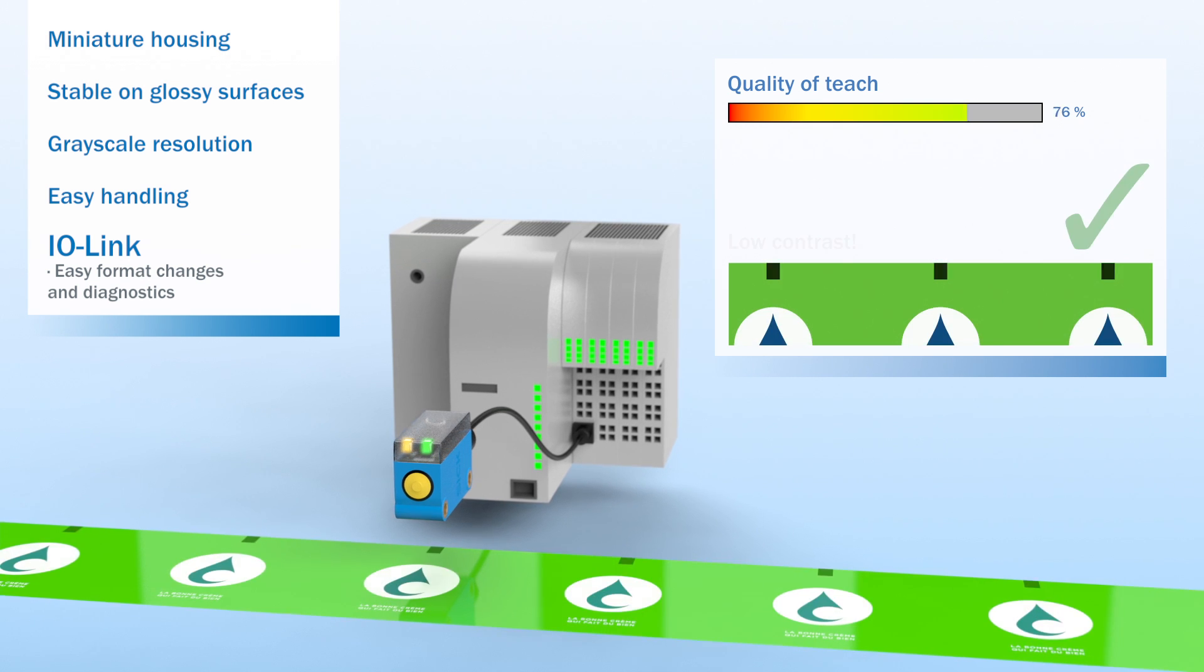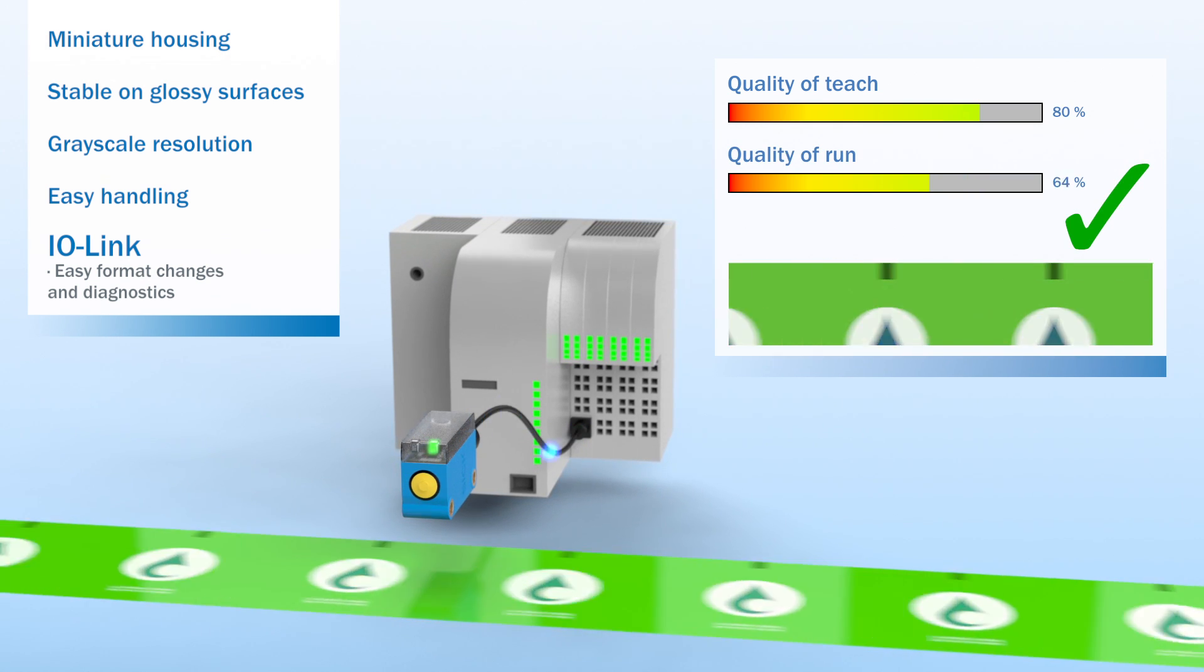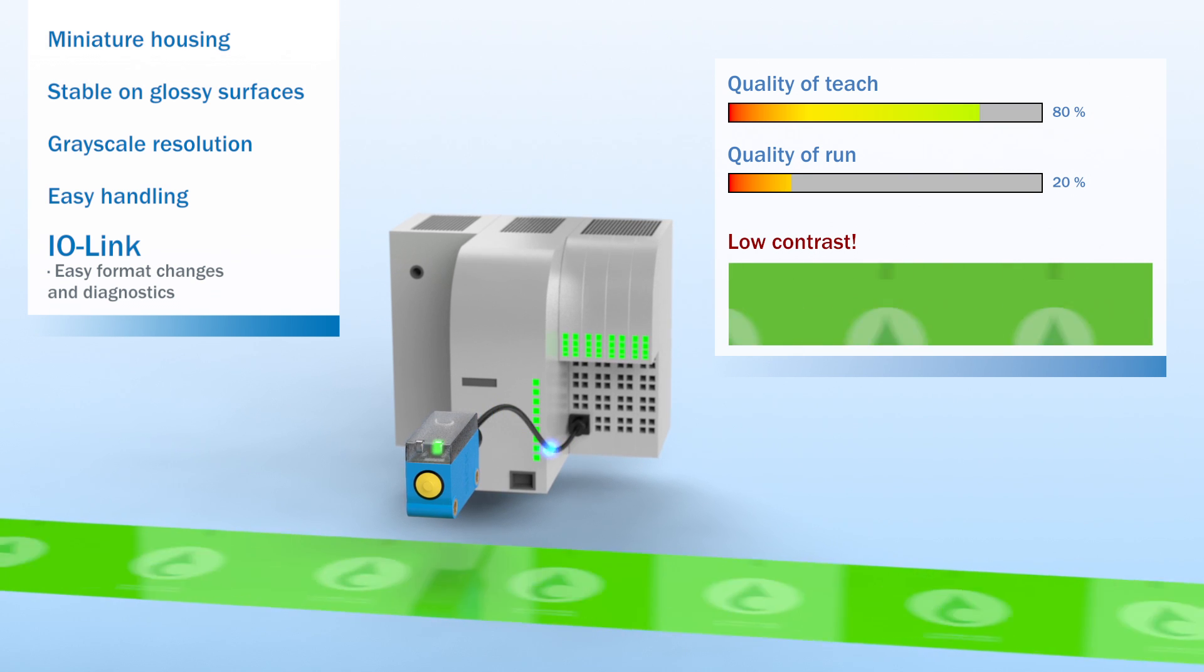If the value changes while the process is in progress, the Quality of Run function reports back immediately.